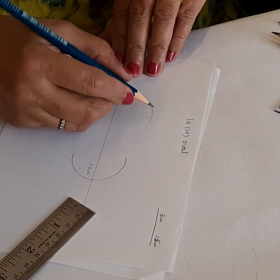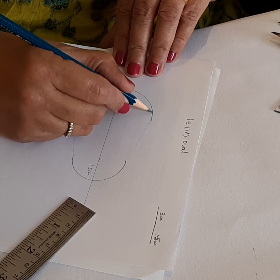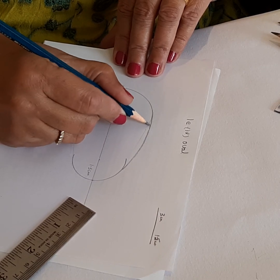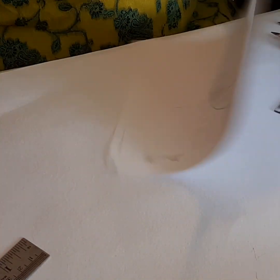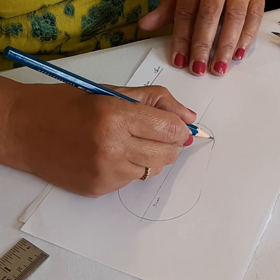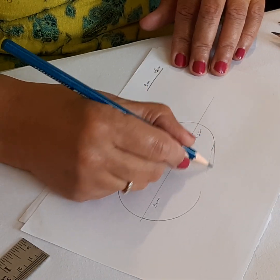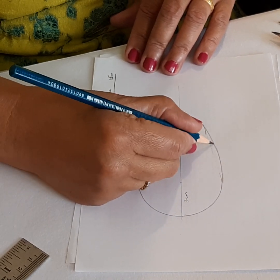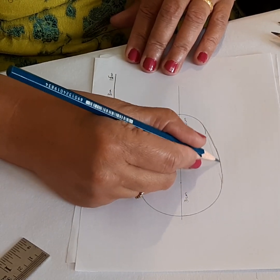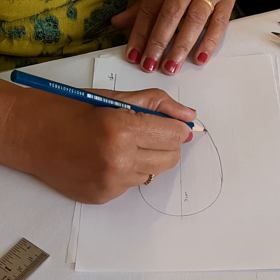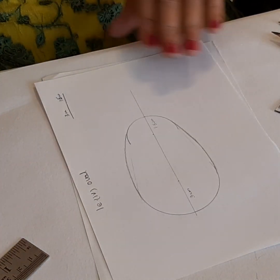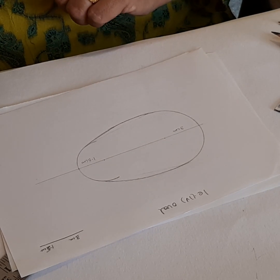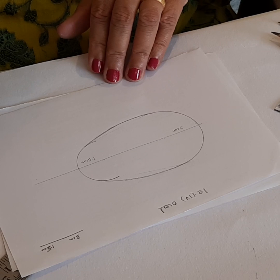And along this guideline, now you will need to join this, give it an oval shape so that this looks like an oval. So that's how you will get your oval. That's the best way I could figure out.